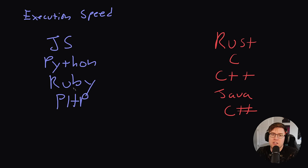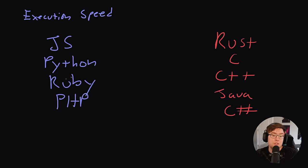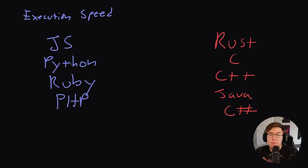In terms of execution speed, Go is much faster than JavaScript, Python, Ruby, and PHP. Pretty much any interpreted language — a language that's not compiled — is going to be slower than Go because Go is a compiled language. For now, just understand that Go is much faster than these languages when it comes to executing programs. If we're doing computationally heavy work, Go is going to be much more performant than some of these other languages.